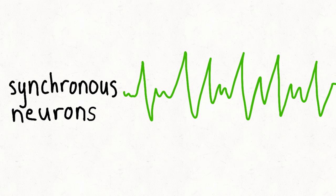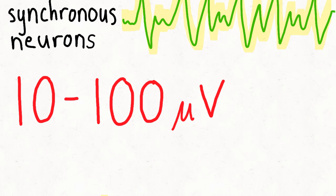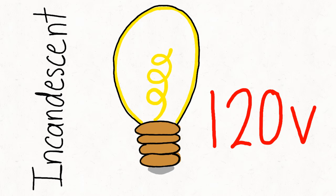Even so, the electricity measured at the scalp is only about 10 to 100 microvolts. To put this in perspective, a standard incandescent light bulb in your house is powered by about 120 volts, which is over 1 million times as much as the voltage read by the EEG sensors, making these sensors extremely accurate.